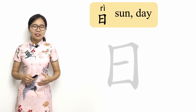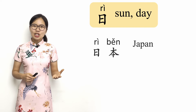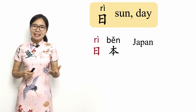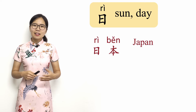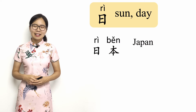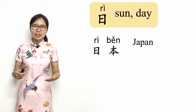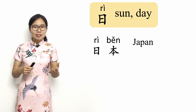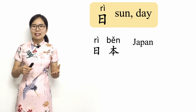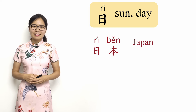Now let's take a look at some example words that use the character 日. First is 日本. 日 means sun, and 本 here means origin. 日本 — the origin of the sun, in other words, where the sun comes from. 日本 is the Chinese name for Japan. Japan is east of China, and since the sun rises in the east, it looks like that's where the sun is coming from. 日本, Japan.